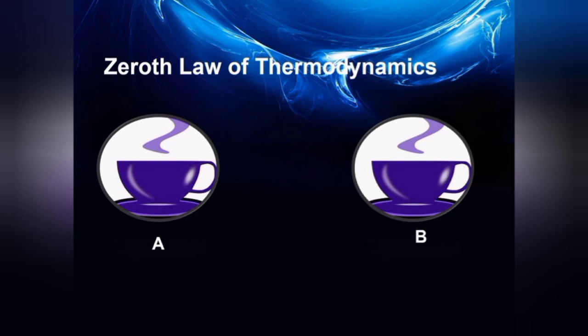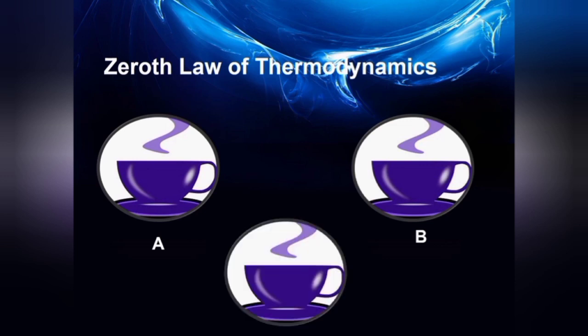The zeroth law states that if two systems are each in thermal equilibrium with a third system, then they are in thermal equilibrium with each other. In simpler words, it is like saying if cup A and cup B are both in equilibrium with cup C, then both A and B cups are at the same temperature.